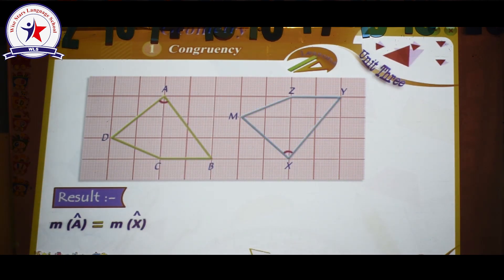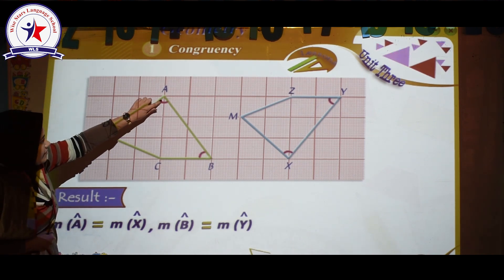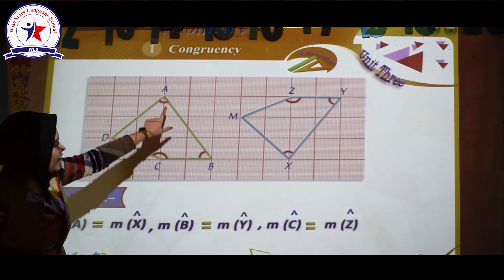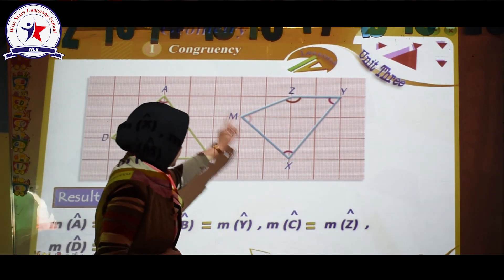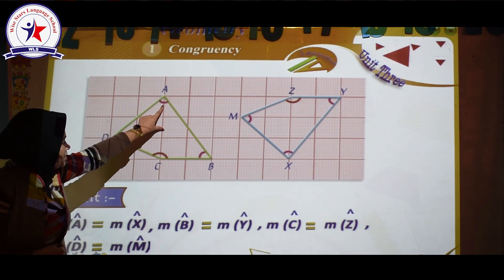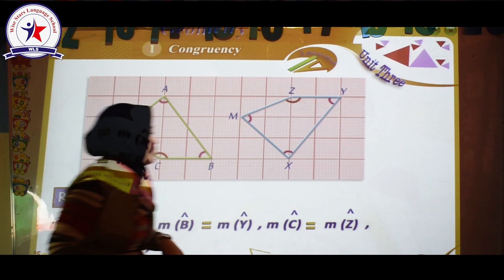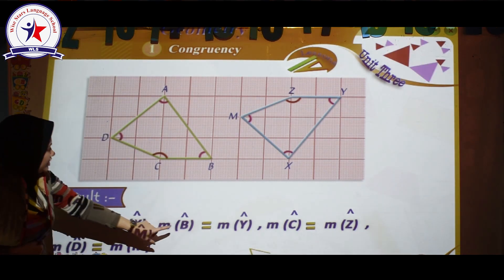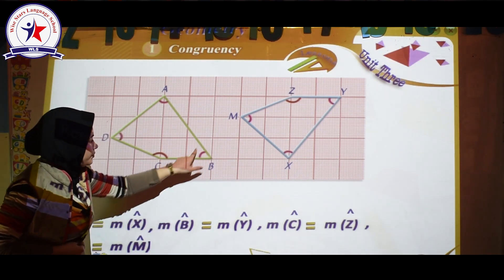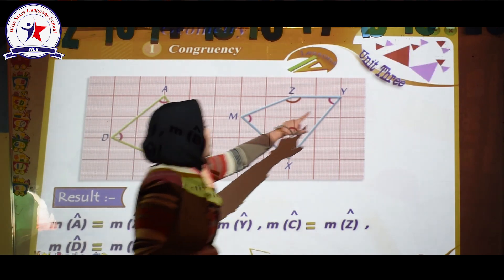And also about measure: the measure of angle A here is exactly the same as the measure of angle X. A and X are exactly the same. If the measure of angle A is 40, then the measure of angle X will be 40 degrees also. The measure of angle B here is exactly the same as the measure of angle Y.